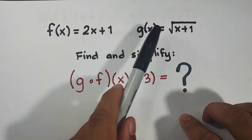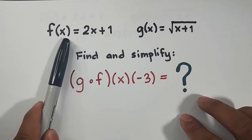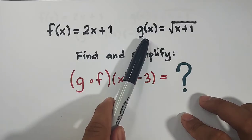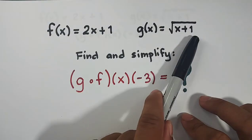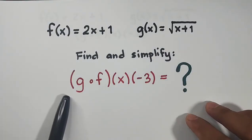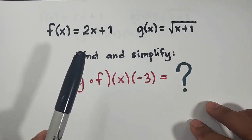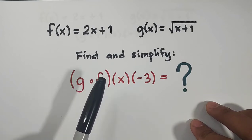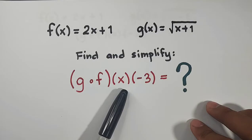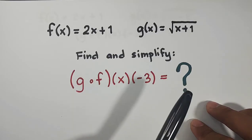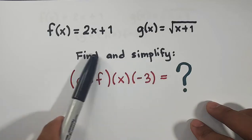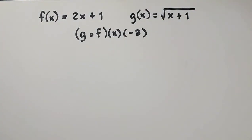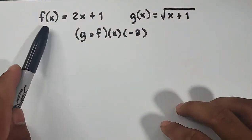So what we have here are two different functions. f of x is equal to 2x plus 1. And we have another function, g of x is equal to the square root of x plus 1. And we are asked to simplify and find g of f of x of negative 3. So what is the evaluated value of this given composite function? So let's solve this problem. So what we have here, again, is this two function.